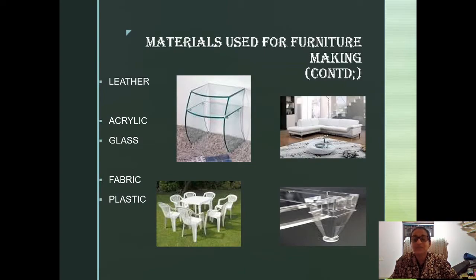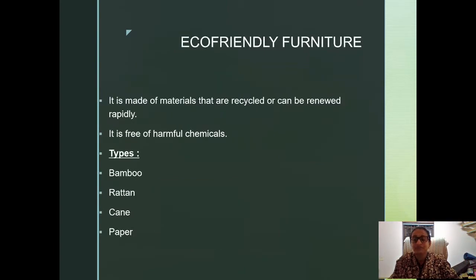Mostly machine-made furniture. Nowadays we are more concerned about the eco-friendly aspects of furniture. You can identify the major eco-friendly materials as bamboo, rattan, cane, paper, etc.